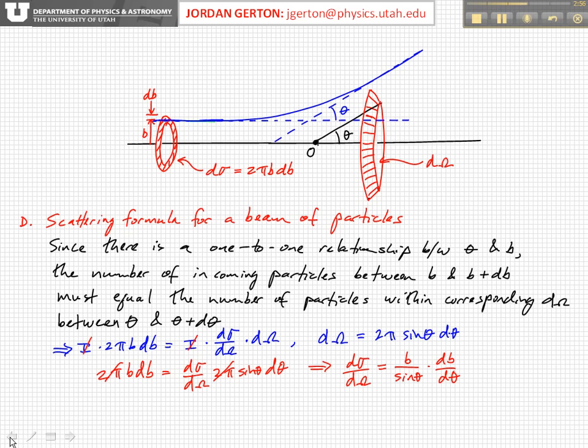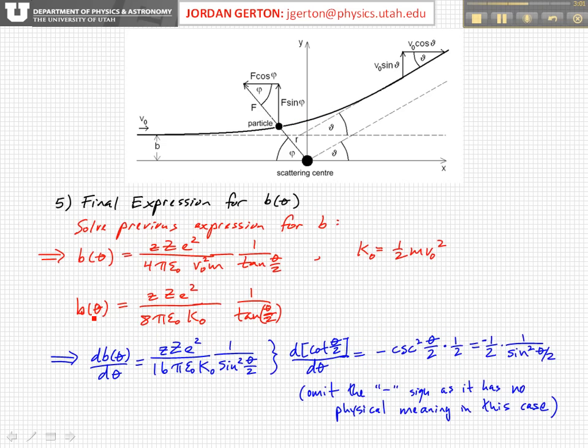So if we look at the expression for b of θ, we find we get this expression, and if we take the derivative of this with respect to θ, we get this expression. Notice we now have sin² θ/2 in the denominator, and also a 16 instead of an 8, and that just comes from the derivative. This here is cotangent of θ/2, so the derivative of a cotangent is minus cosecant squared, and then we have θ/2, so it picks up one-half. We drop the minus sign because, in this case, it has no physical meaning.